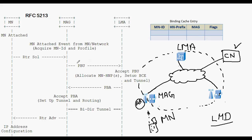Upon receiving the proxy binding update, the LMA will check if the binding cache entry data structure already has the details for this mobile node. If not, it will create an entry in the binding cache entry with the mobile node ID and will create a home network prefix. The proxy binding update has a flag to indicate that it is a proxy binding update sent by the MAG for Proxy Mobile IPv6.